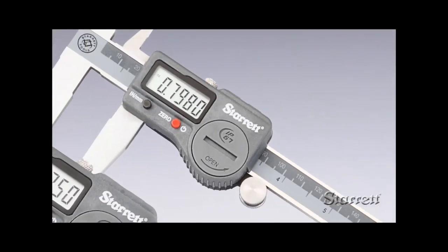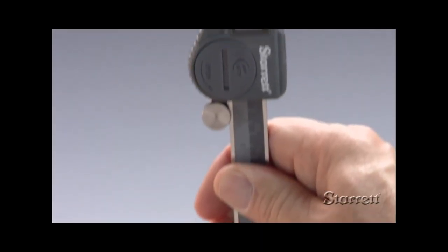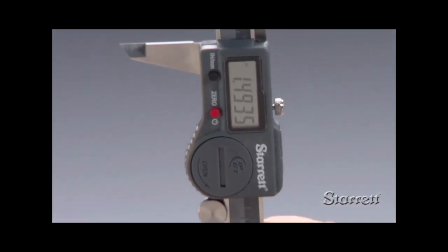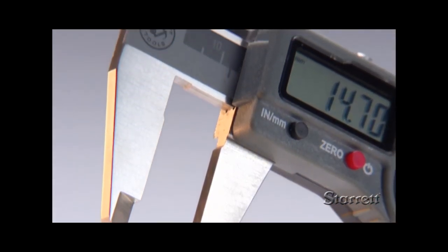Available in 6, 8, and 12-inch sizes, the 798 is a full-featured electronic tool with an easy-to-read display, inch-millimeter conversion, and zero set at any position.